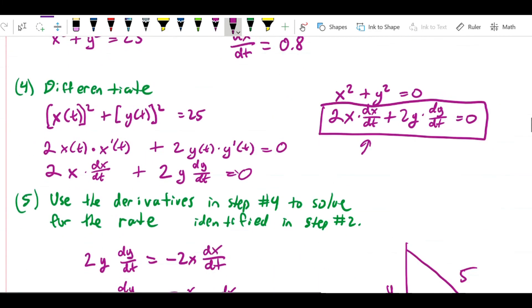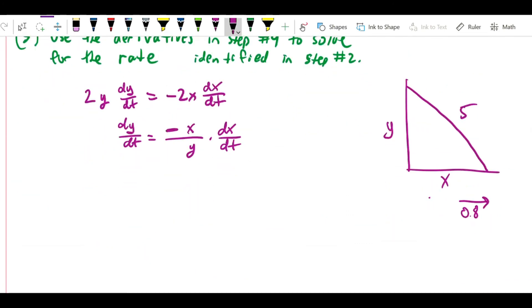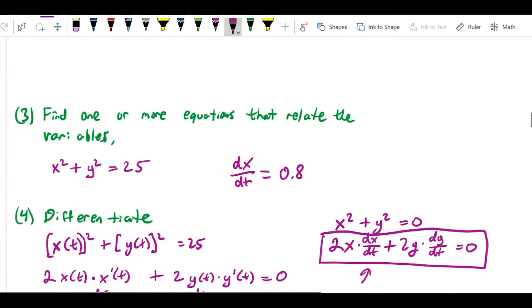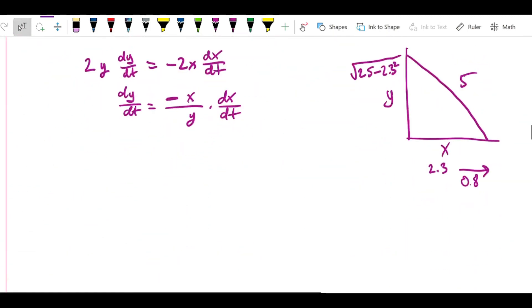What that means is that at the time that we care about, x equals 2.3, and y is therefore by the Pythagorean theorem equal to the square root of 25 minus 2.3 squared. That's just given the Pythagorean theorem. And we also know that dx dt is itself 0.8. So we have everything we need.